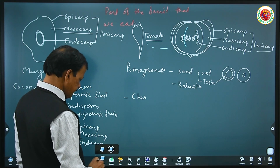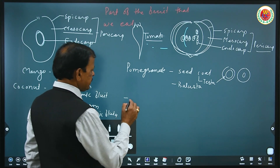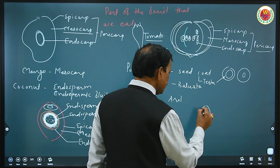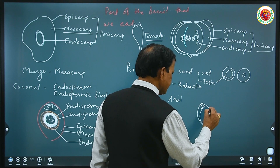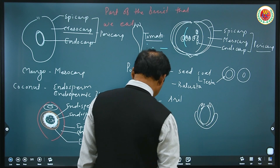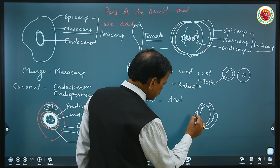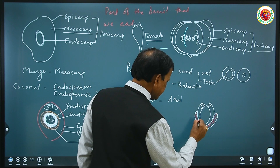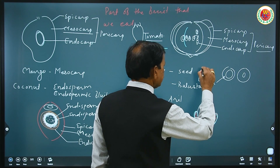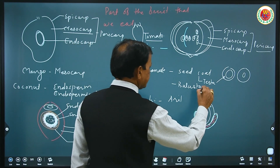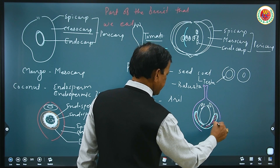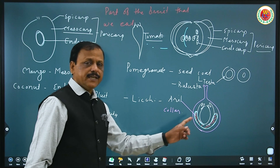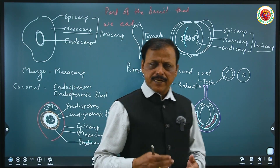In lychee — not cherry — we eat the aril part. The aril is the part all around the ovule. The ovule has outer integument and inner integument, and all around the ovule this collar-like part is called aril. This can be highlighted with a picture — this collar part is called aril, also known as a collar.